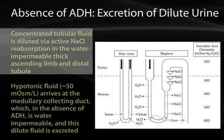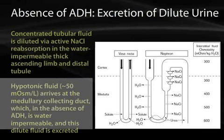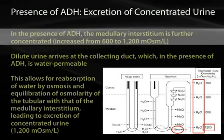In the absence of ADH, dilute urine is formed. Concentrated tubular fluid is diluted by active sodium chloride reabsorption in both the thick ascending limb and the distal tubule — known as the diluting segments of the nephron. Thus, hypotonic fluid arrives at the medullary collecting duct. In the absence of ADH, the collecting duct epithelial cells are impermeable to water and a very dilute urine is excreted.